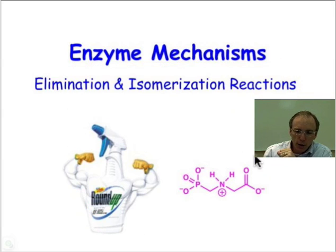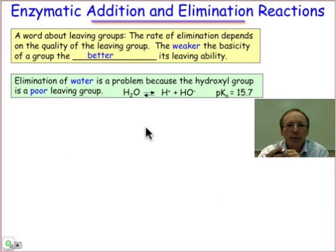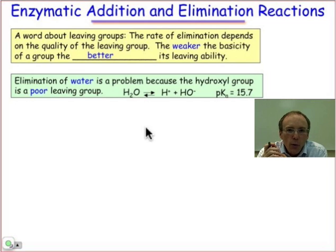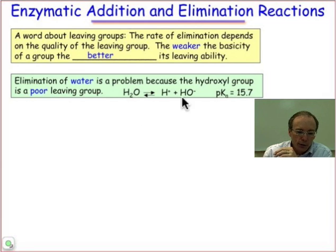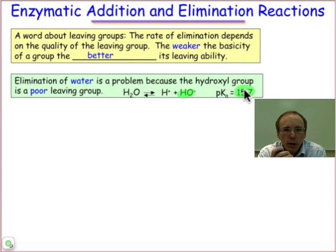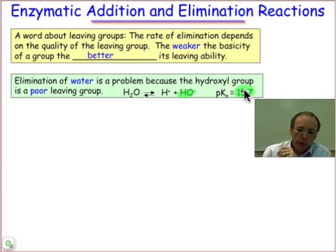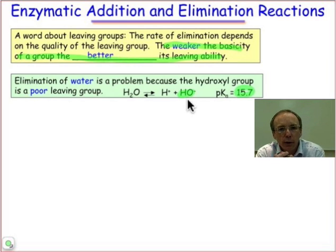So if we remember anything about elimination reactions — if the elements we're trying to eliminate are water, say a hydroxide group from an alcohol — well, we know that we have a pretty poor leaving group. Because water, the conjugate acid of the leaving group hydroxide, has a very low acidity. It has a pretty high pKa, meaning it's a very weak acid. And we would like to be dealing with not strong bases as leaving groups, but weak bases. Because the weaker the base, the better the leaving group. And hydroxide is simply too strong of a base to be a very good leaving group.